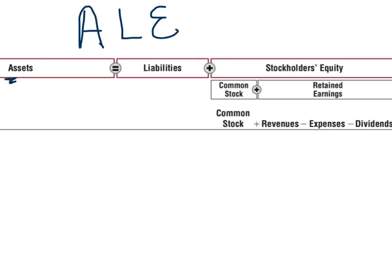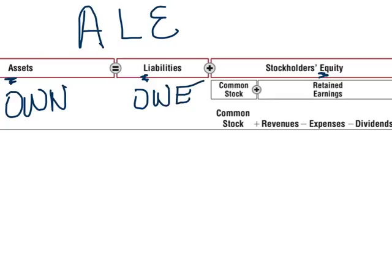ALE stands for assets equals liabilities plus equity. Assets are things that we own, liabilities are things that we owe, and equity is the difference between what we own and what we owe. Equity is actually broken into two components: common stock plus retained earnings.